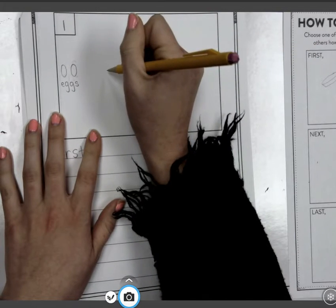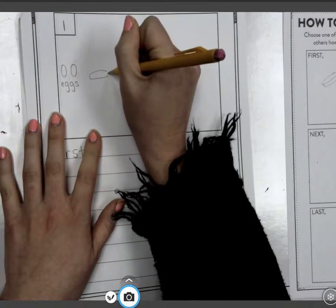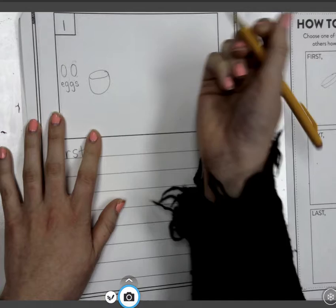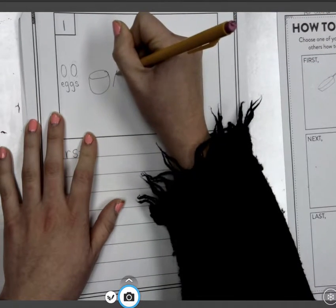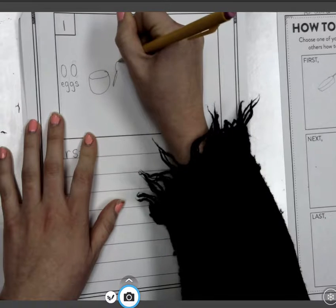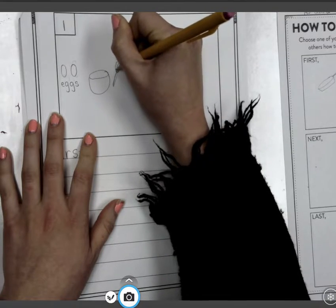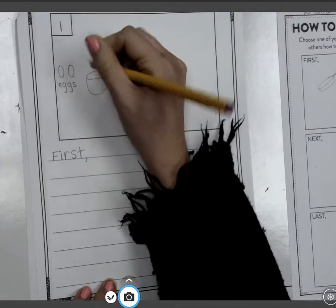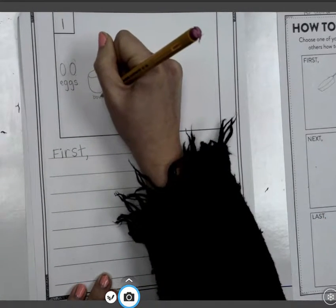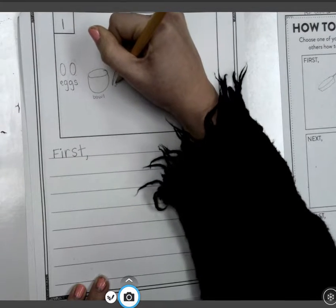And like I said earlier, I need a bowl and a whisk. So our reader might not know all the tools that you need. And yours might say something a little different or look a little different. So I'm going to just label everything. So that's a bowl, and this is a whisk. That way my reader knows.